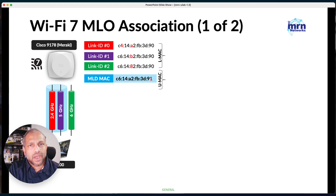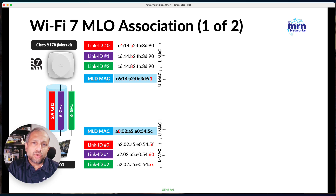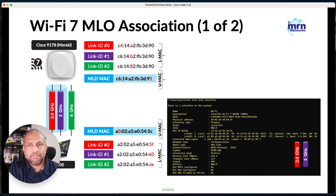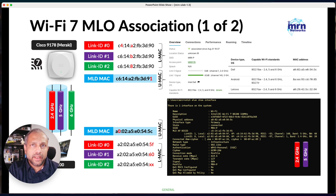From the client station's perspective, there are physical link-level MAC addresses as well as an upper MAC, also called the MLD MAC address. Looking at the NETSH WLAN show interface output, you can see the client established a connection using 2.4 and 5 GHz, with the MAC address details for each link shown, along with the AP's MLD MAC address. On the Meraki dashboard, you can see link 0 and link 1 shown as the client connection, indicating an MLO connection.